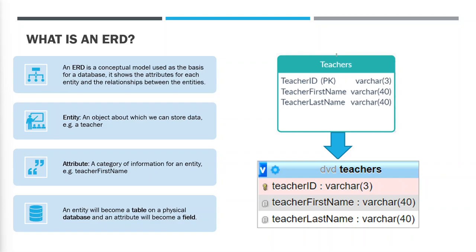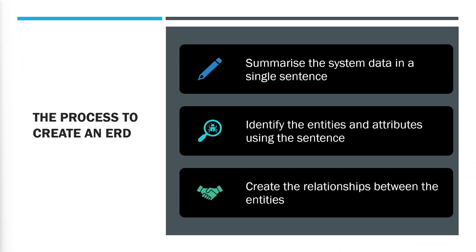The steps to actually create an ERD: the biggest problem is being able to identify the entities. One nice way of doing this is to try and summarize the system or the data within the system in a single sentence, which often enables you to pick out the entities directly. Once you've done that, it's relatively simple to identify the attributes for those entities, and then I can show you a method for creating the relationships between the entities by asking two simple questions.